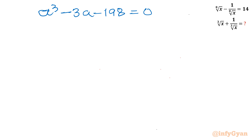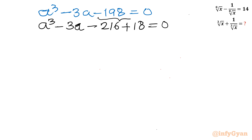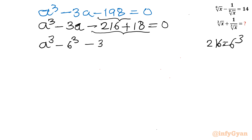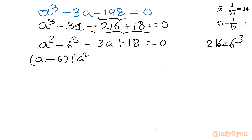Using factorization: a cube minus 3a minus 198 equals 0. We rewrite minus 198 as minus 216 plus 18, giving us a cube minus 216 minus 3a plus 18 equals 0. Recognizing 216 as 6 cube, we write a cube minus 6 cube, then minus 3a plus 18 equals 0. Applying the a cube minus b cube formula as (a minus b)(a squared plus ab plus b squared), we get (a minus 6)(a squared plus 6a plus 36) minus 3(a minus 6) equals 0.